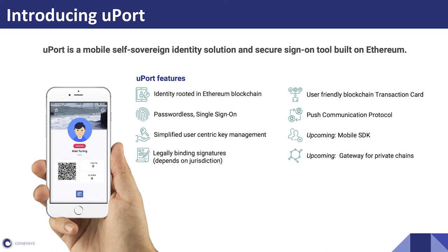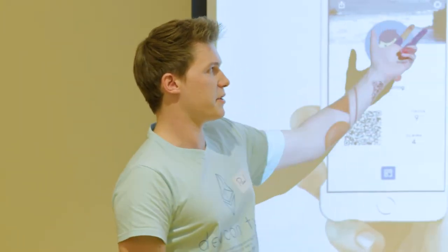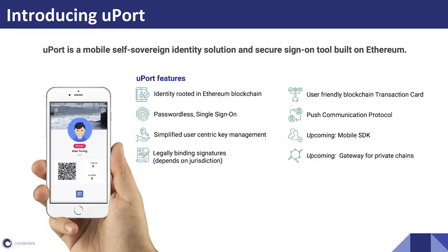So what is Uport? Uport is a mobile self-sovereign identity solution and a secure sign-on tool. This is what the app currently looks like — we're live in the app store today. We just moved from closed alpha to public alpha. Uport gives you an identity rooted in the Ethereum blockchain, with a passwordless single sign-on — if you want to log into a website or engage with an application, you whip out your phone and scan a QR code. Any application trying to manage user accounts doesn't have to store any data on their site.